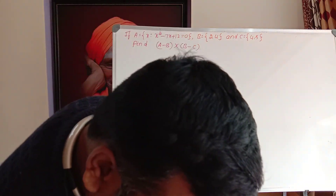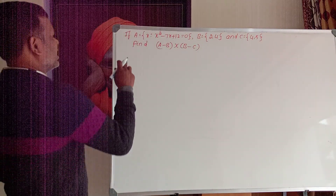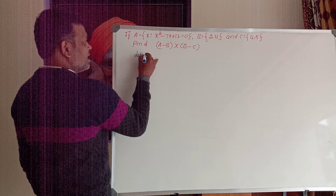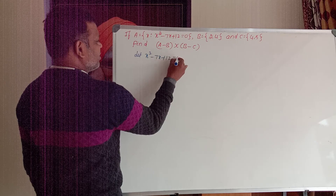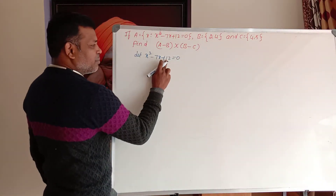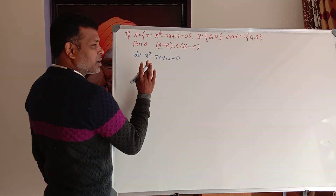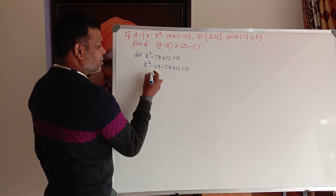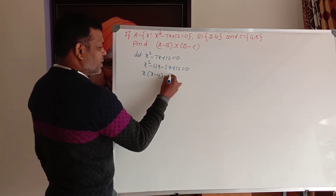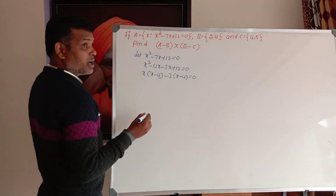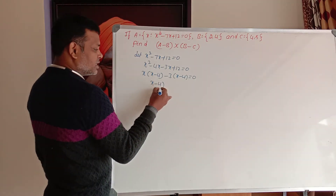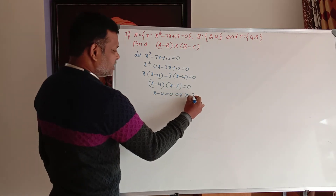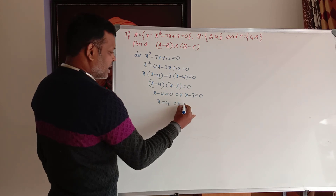First, write down the sets. Set A: x such that x squared minus 7x plus 12 equals 0. This is a quadratic equation. Factorize it: multiply to get plus 12, add to get minus 7. So: x squared minus 4x minus 3x plus 12 equals 0. Factor: x(x minus 4) minus 3(x minus 4) equals 0, giving (x minus 4)(x minus 3) equals 0. Therefore x minus 4 equals 0 or x minus 3 equals 0.